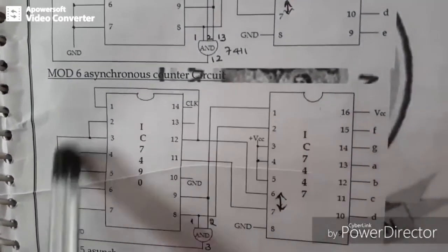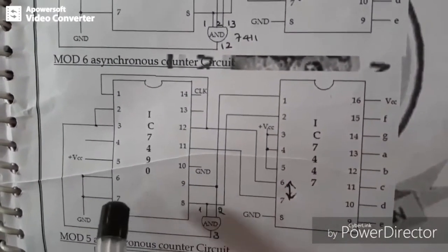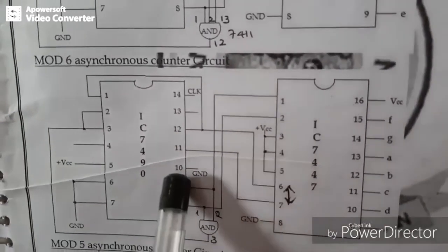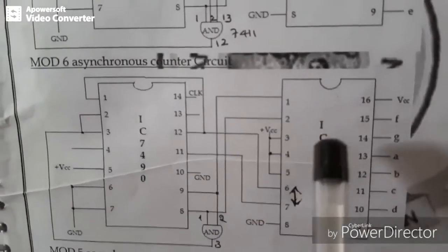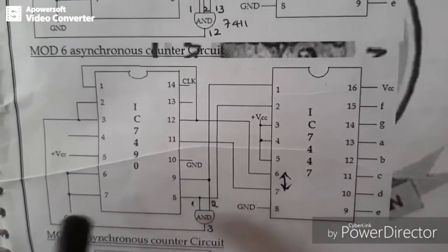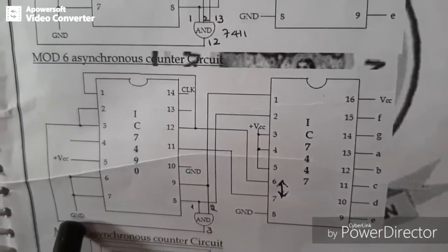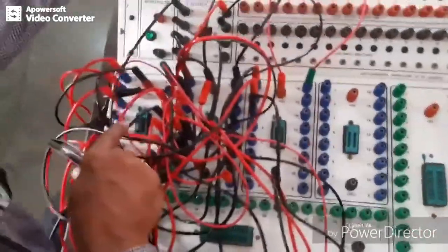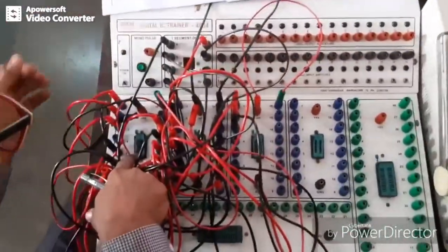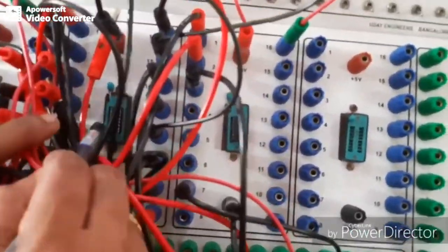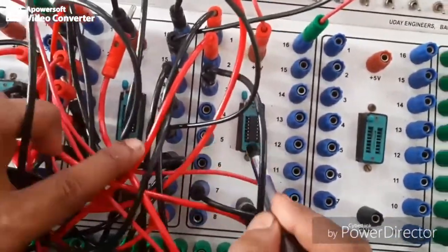So we have to implement the connection as shown in the diagram. For example, in IC 7490 pin 5 is connected to VCC and pin 10 is connected to GND. Then in IC 7447 pin 8 is GND and pin 16 is VCC. Other than that, here pin 6 and 7 you have to short it and connect to GND. Here we have 7490, 7447, and 7408.